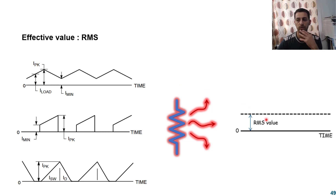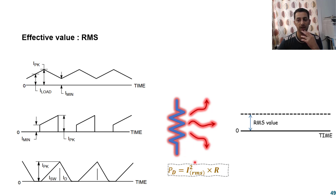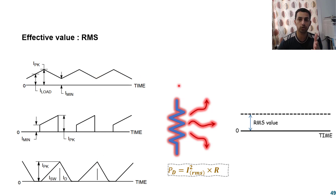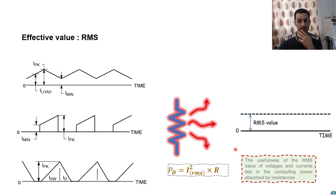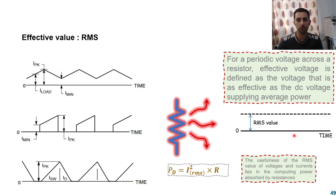The usefulness of RMS is that it makes it easy to calculate the power dissipated across a resistor: power dissipation equals the square of the RMS current times the resistance, i.e., P = I²RMS × R. Without RMS you would need software to compute power from arbitrary waveforms, but once you have the RMS value you simply substitute it into that equation. For any periodic voltage, the RMS is the effective value that generates exactly the same heat across a given load.